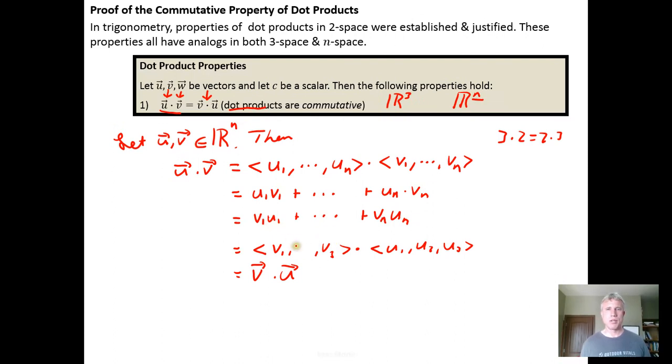And then here we get our ellipses. And we've made our proof for generic n dimensional space.